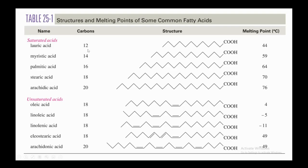The saturated fatty acids are: lauric acid (12 C, mp 44°C), myristic acid (14 C, mp 59°C), palmitic acid (16 C, mp 64°C), stearic acid (18 C, mp 70°C), and arachidic acid (20 C, mp 76°C). One important observation: as the carbon chain length increases, the melting point also increases. These are acids because they all contain a –COOH group.